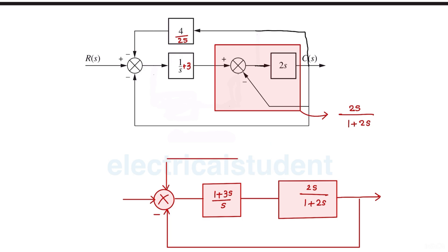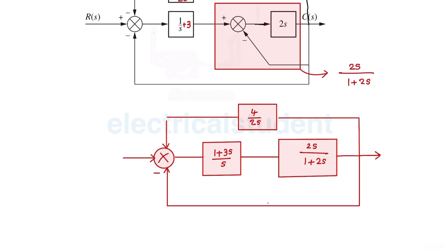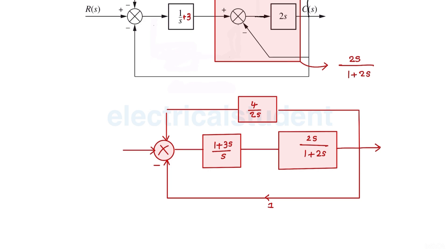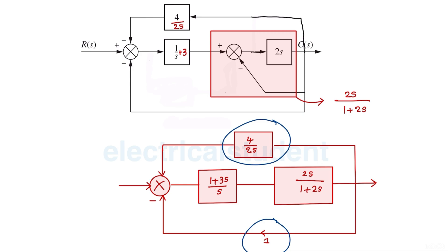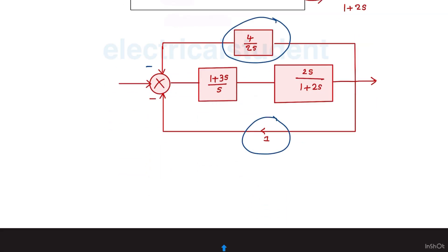There is one more feedback loop which looks like this. So now this is 4 over 2s. And this is basically a unity feedback path, so this is 1. Now clearly this and this, both are in parallel basically.